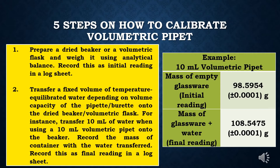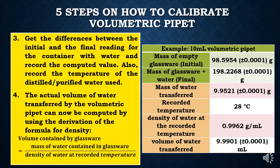Record the mass of the container with the water transferred; record this as the final reading in a log sheet. As an example: there is a 10 ml volumetric pipette to be calibrated. The mass of the empty container is 98.5954 grams. When the water was transferred onto the container, it now weighs a mass of 108.5475 grams.